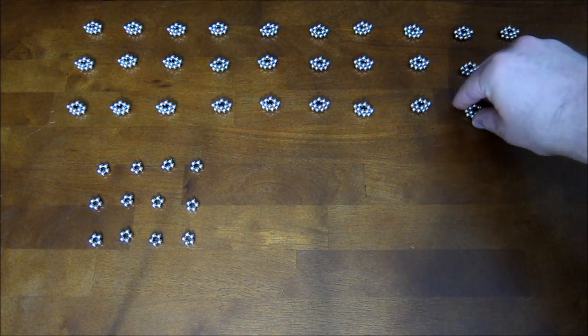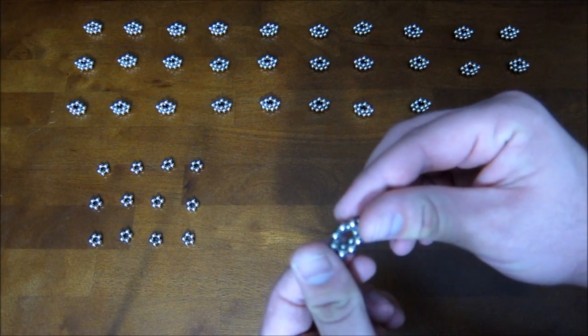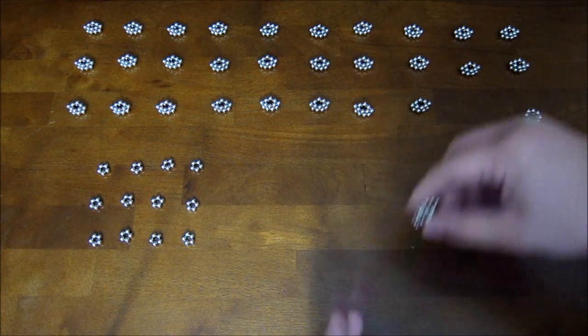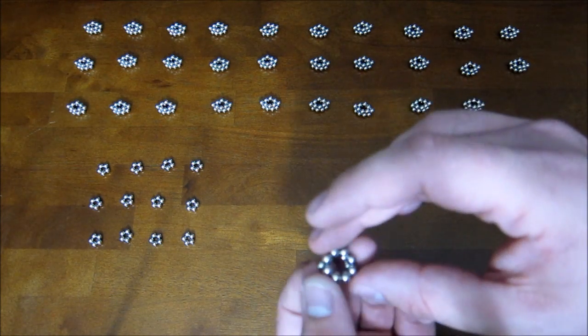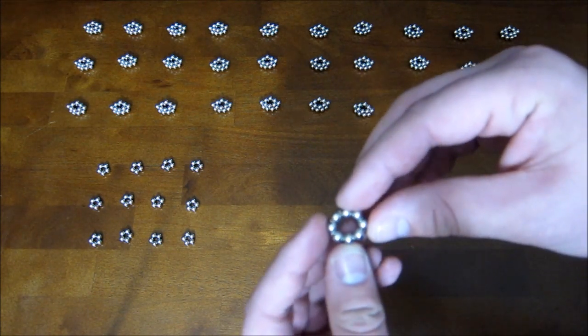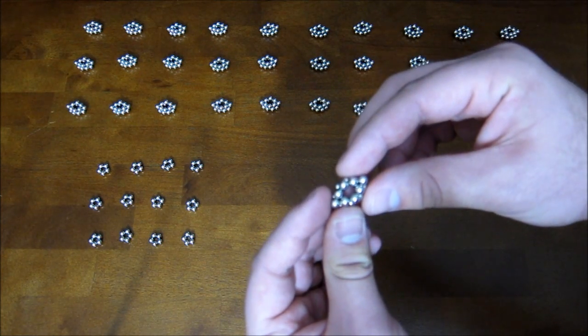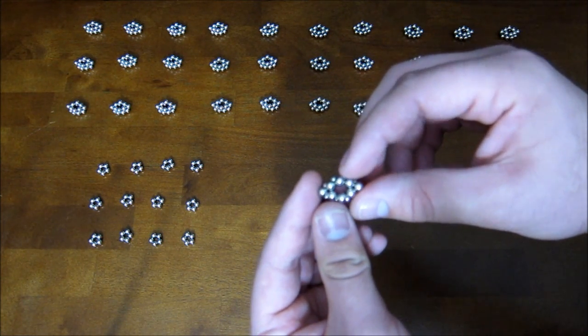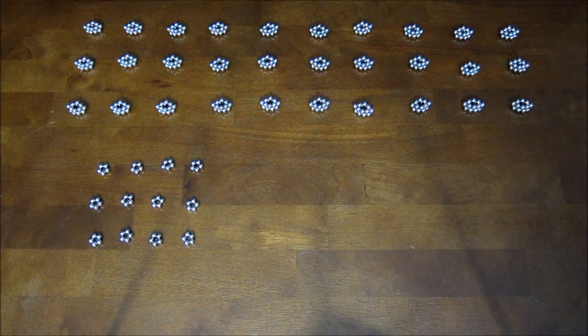Anyway, what you're gonna need are 30 of these subunits here. These are pretty simple to make. All you need are two stacked rings of eight. Then you take the rings of eight and you pinch them down on the corners into a kind of diamond shape on one side. You need 30 of those and then you also need 12 pentagons, and that's it.